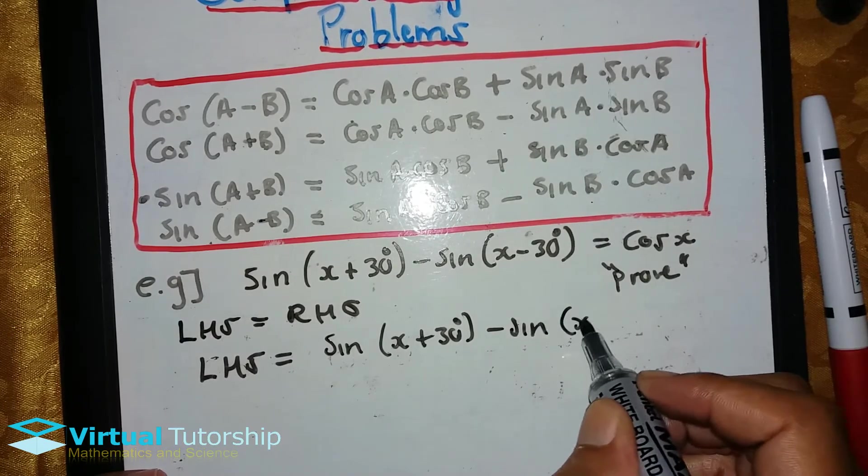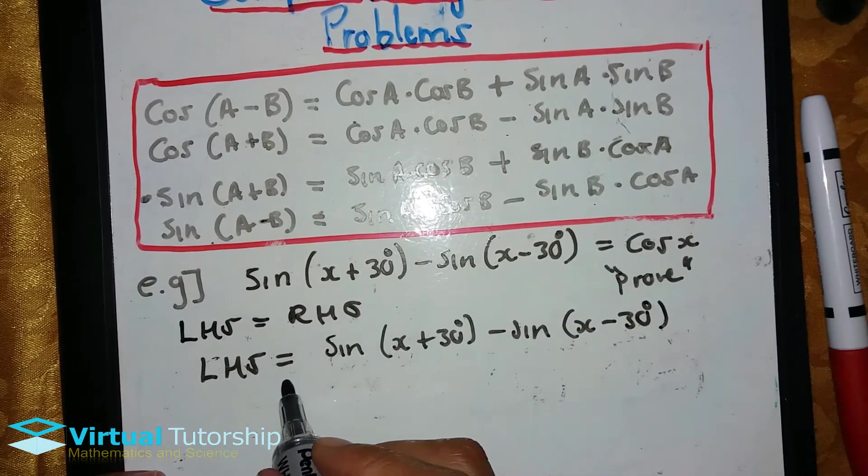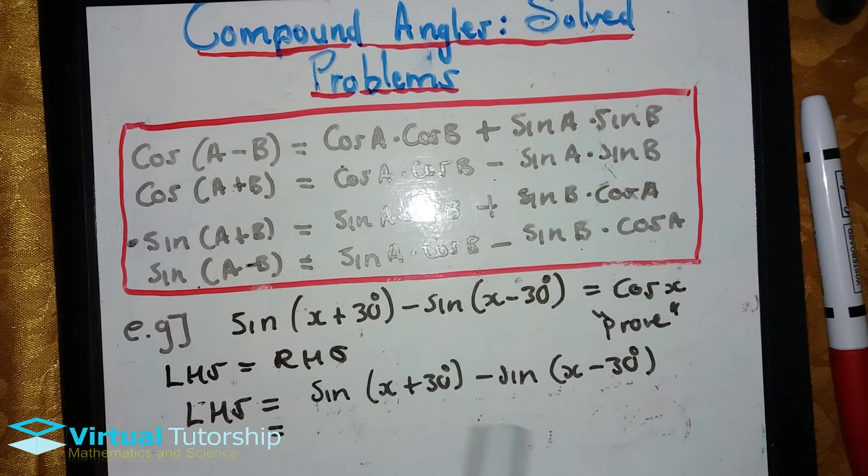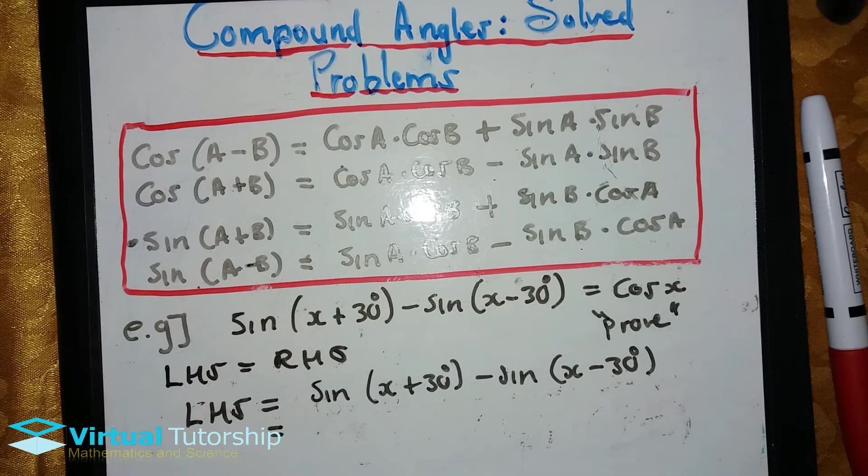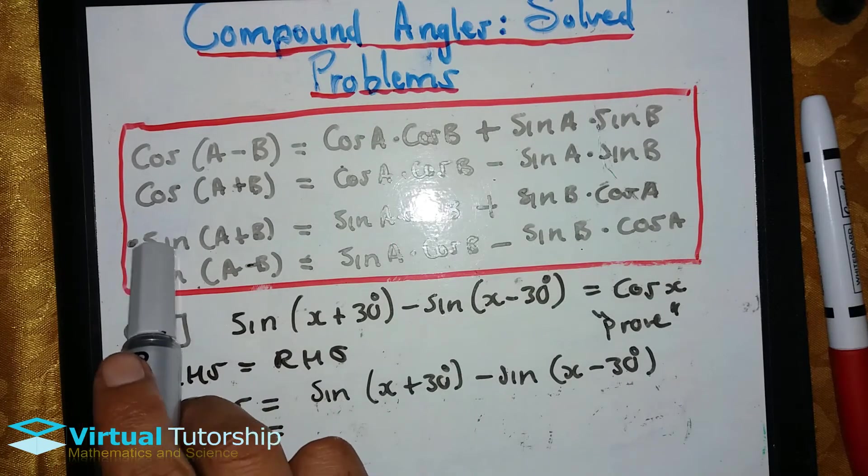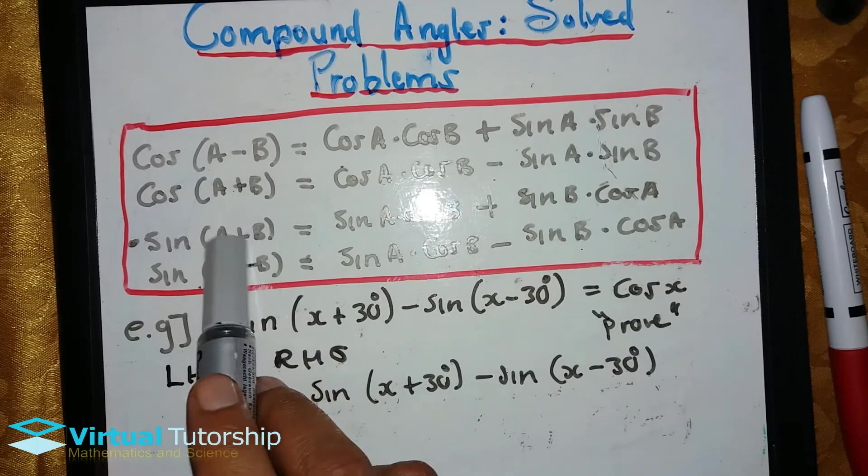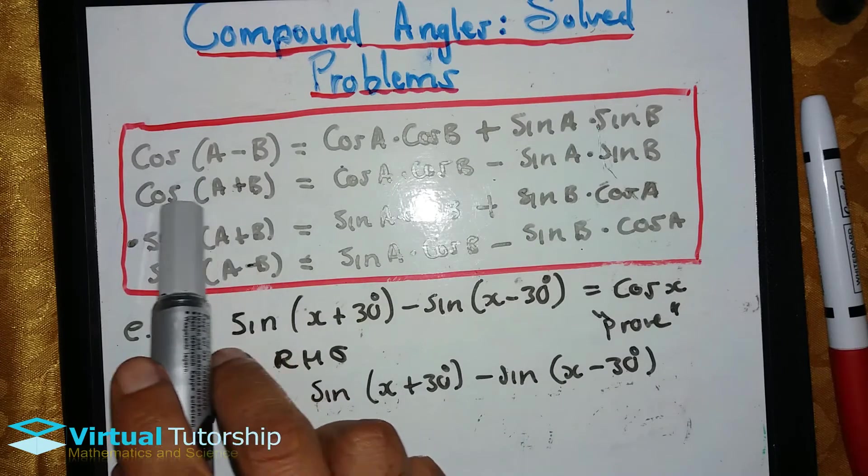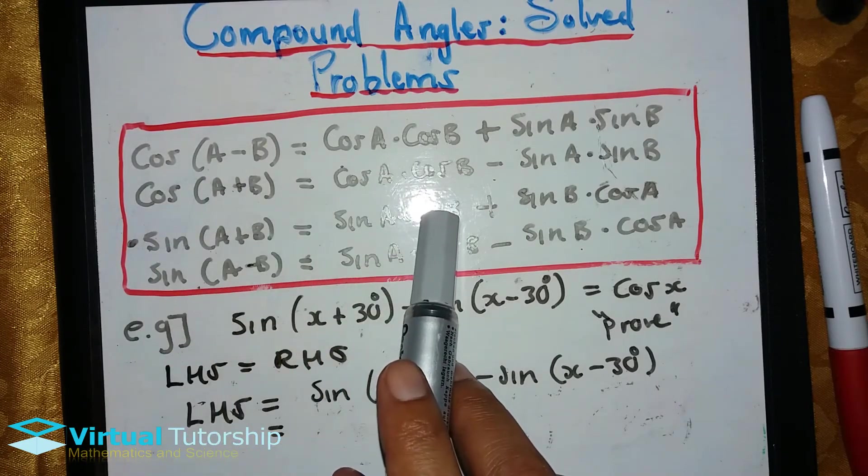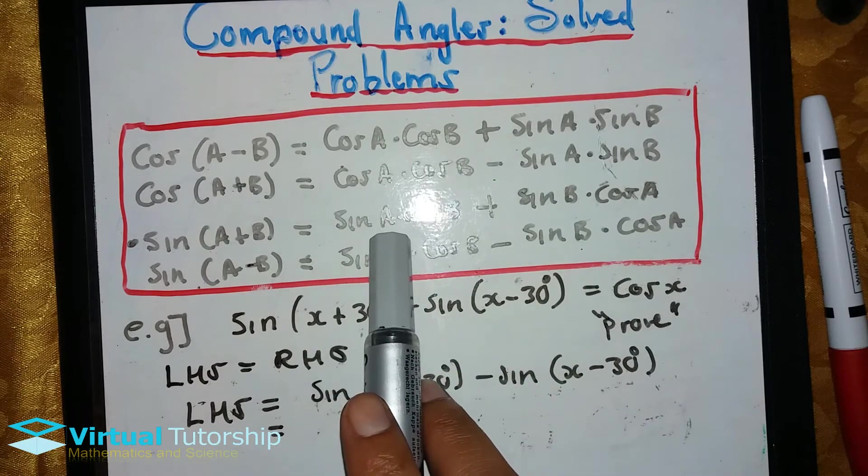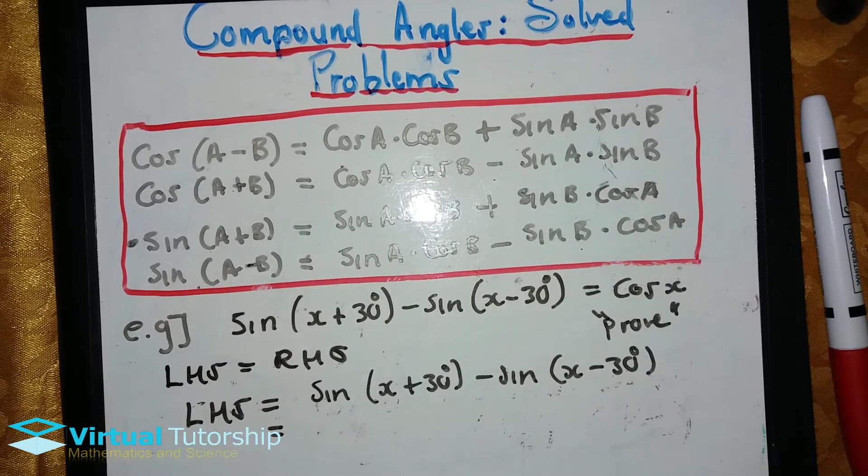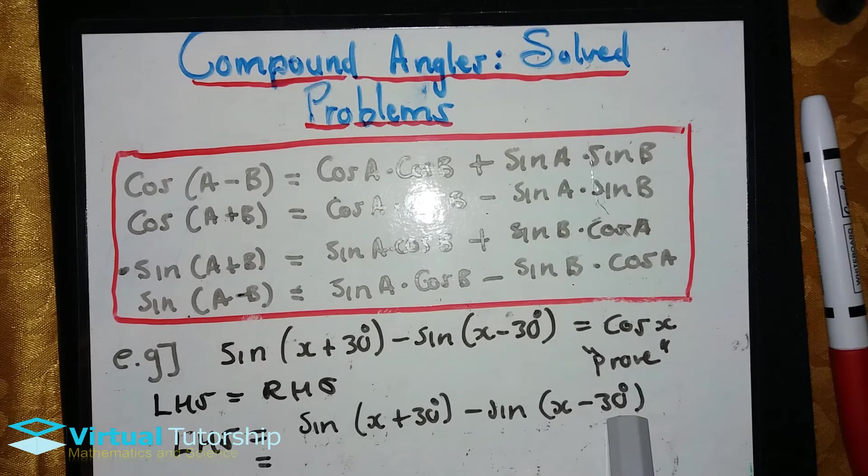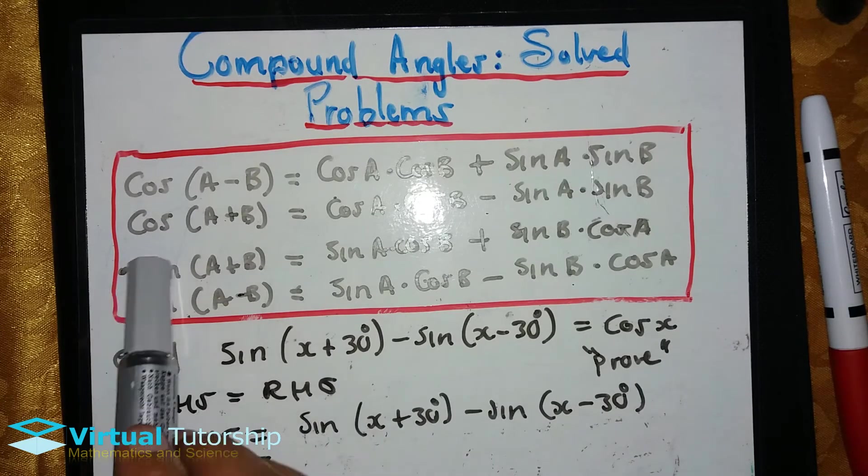Now when working with compound angles, it is important that we can work in both directions. So when we have a compound angle, like sine A plus B, we can work in the forward direction. And when we have two angles that add or subtract and it's sine, we can work in the backward direction. So we have two angles that subtract, and it's sine, so we'll use compound angles.